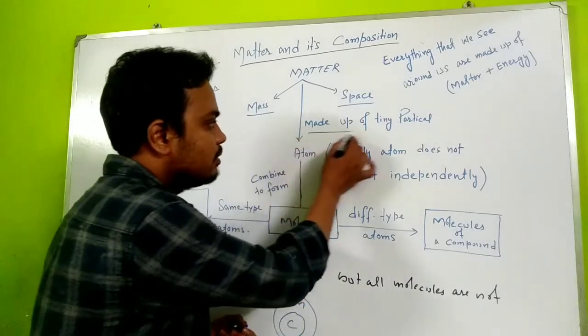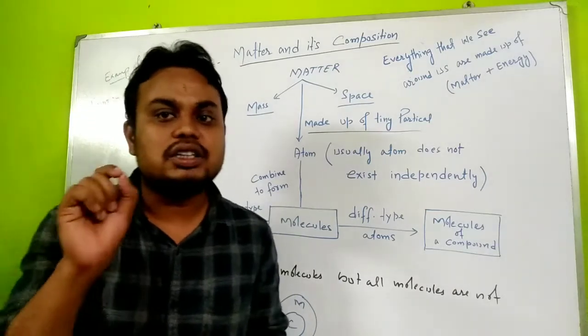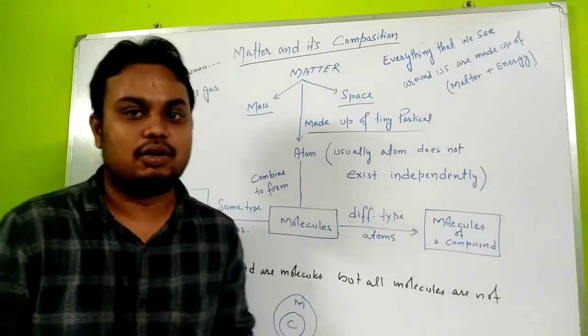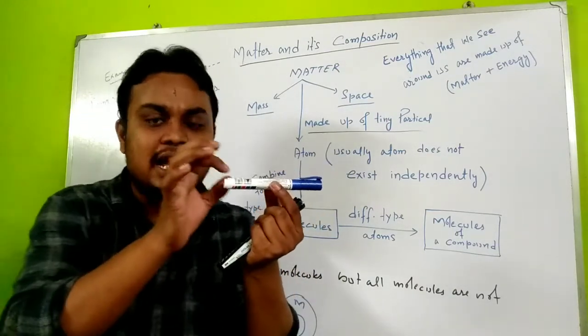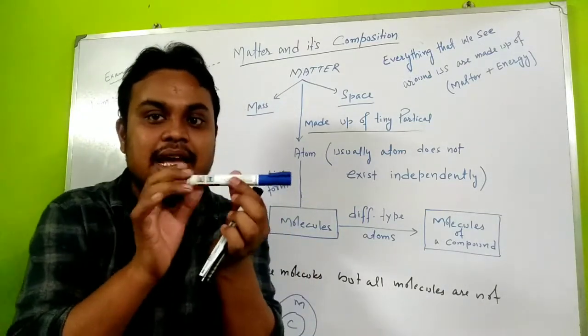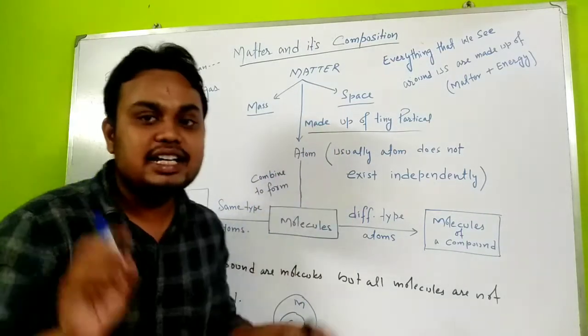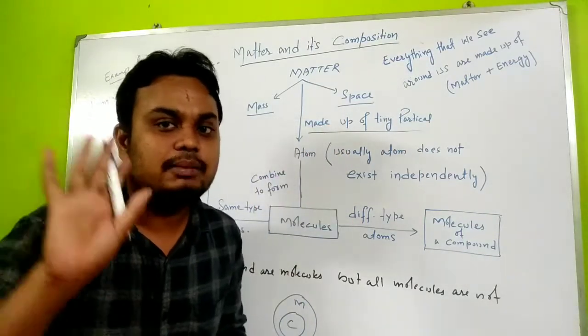Now, matter is made up of very tiny particles. Matter is made up of very small particles. For example, if you take this pen, it is made up of plastic. Matter is made up of very small particles.